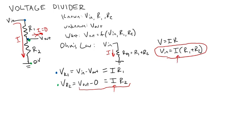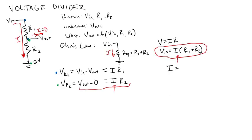So I can rearrange that equation to solve for I. So I have I equals V in over R1 plus R2. Plug that in for I over here, and then I have my equation for V out.